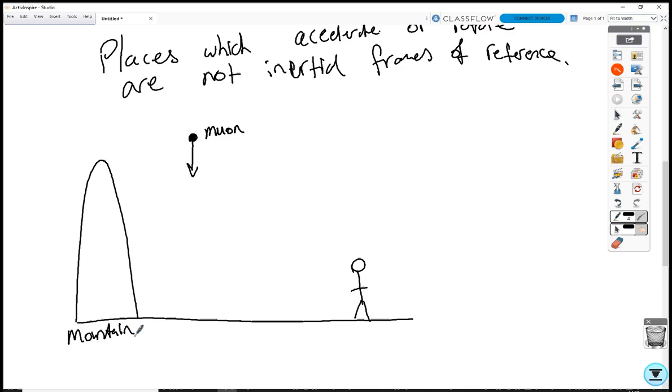If we take a measurement of how many muons are passing by a lab at the top of a mountain, and we know the lifetime of muons, then we can estimate how many muons should be left that reach the ground.